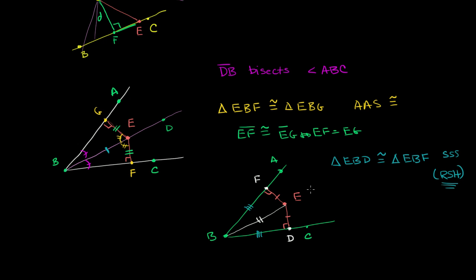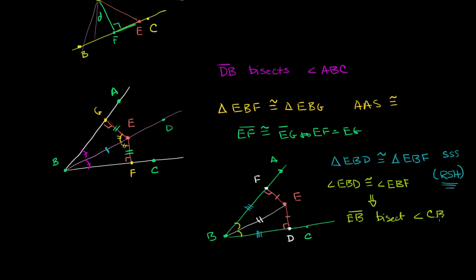So we know that angle EBD must be congruent to angle EBF. If EBD is congruent to EBF, then segment EB must bisect angle CBA — so we're done.